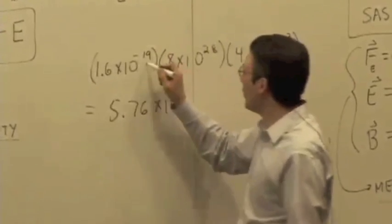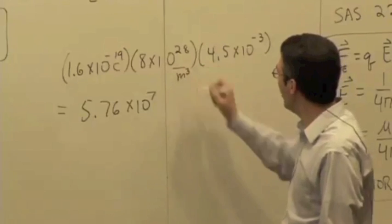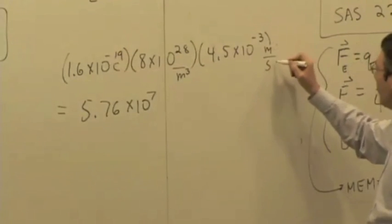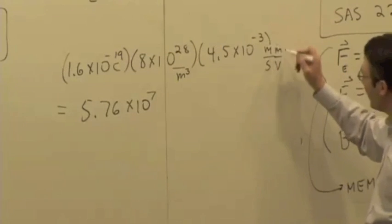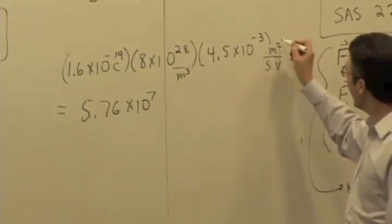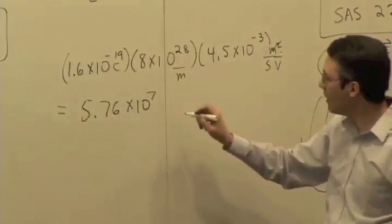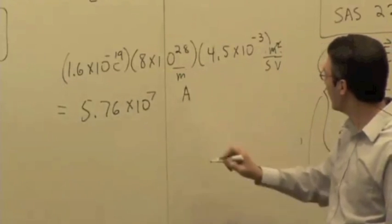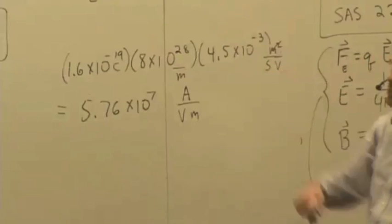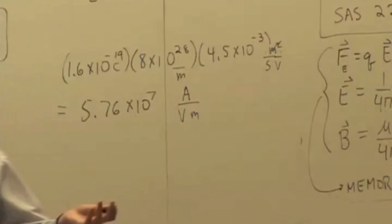The units: we have coulombs, we have electrons per meter cubed, and we have meters per second divided by volts per meter. It looks kind of ugly. We have meters squared here, and meters squared is going to cancel out with that and leave a meter here. And coulombs per second is an amp, so we have amps divided by volt meters, which is the same thing as that, only unsimplified.